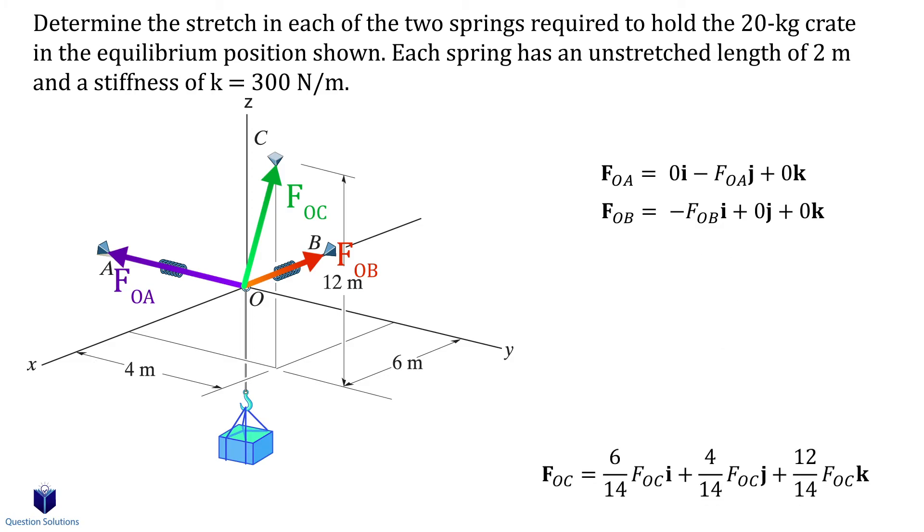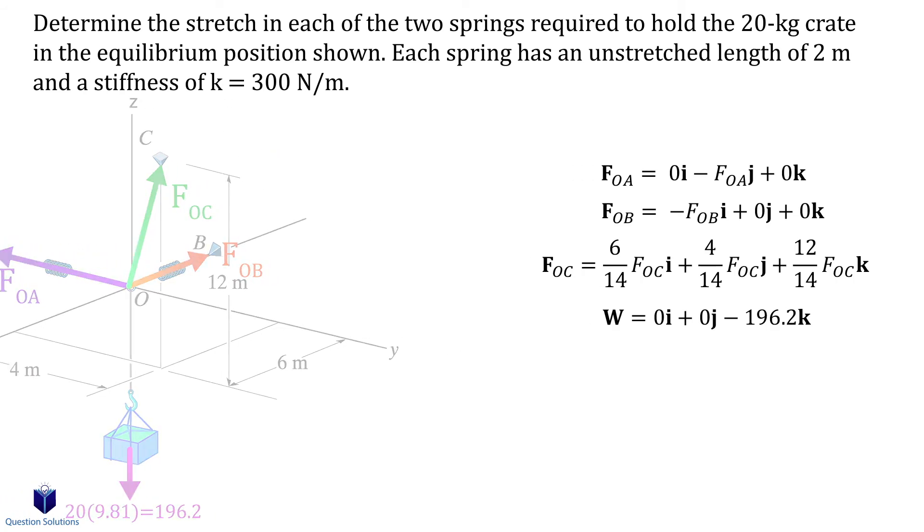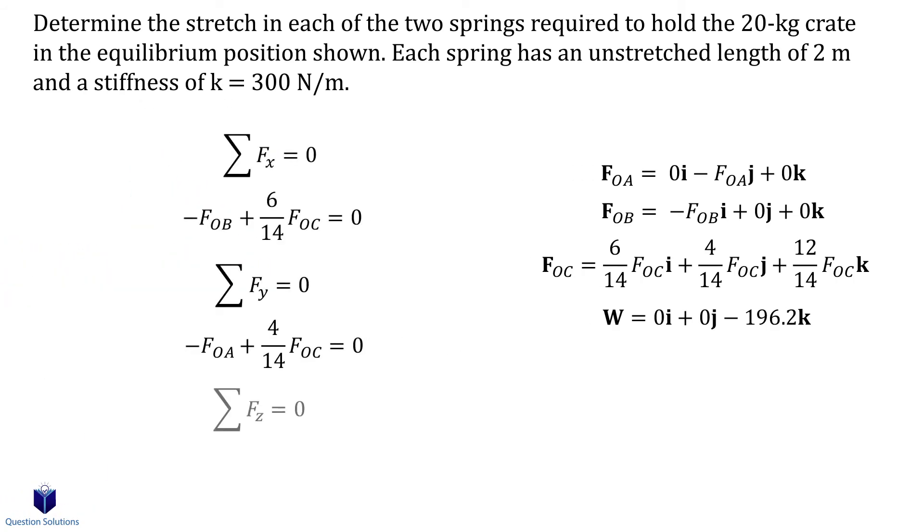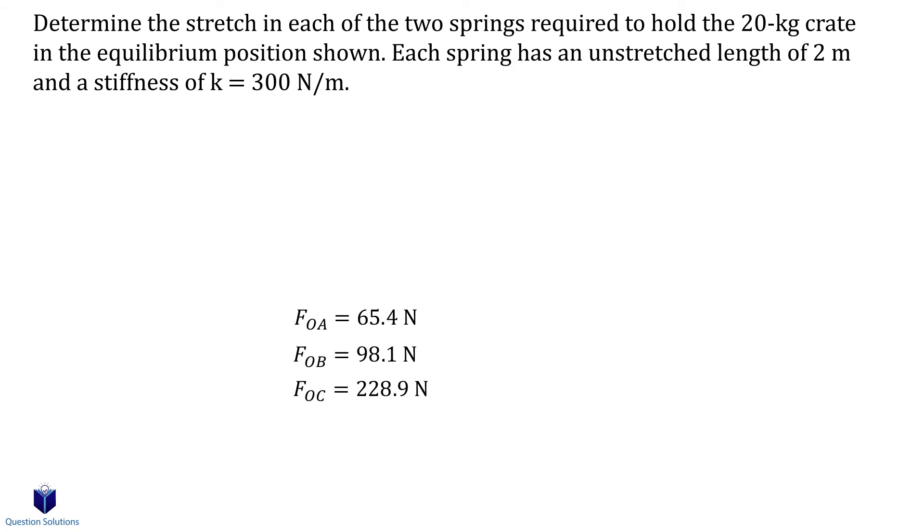We have one more force which is the weight of the crate. That can be expressed in Cartesian form like this since it's straight down and only has a k component. Now we can equal each component to zero.